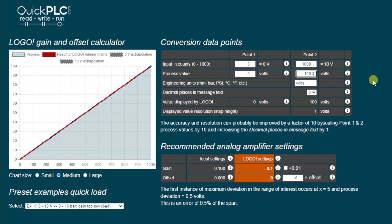So we can improve that as suggested in the tips here by increasing the gain. So if we add another zero and say that 1000 counts on the input gives us 100 volts, well, that's obviously wrong. But if we increase the decimal places by one, the display on the logo will be 10 volts, which is what we want. So looking at the chart, we can say that the zigzag or the step size has decreased significantly. Looking down here, we've gone from an error of half a volt maximum to 0.05 volts maximum or half a percent.